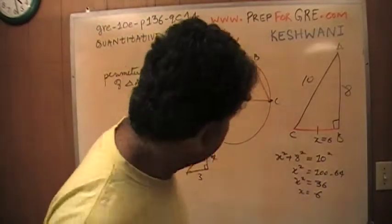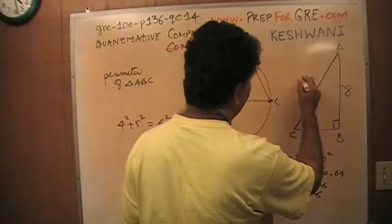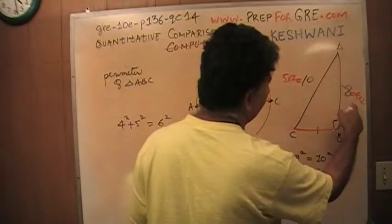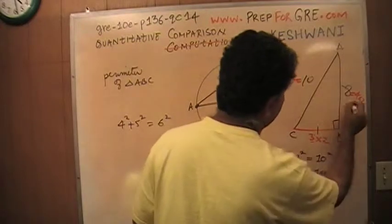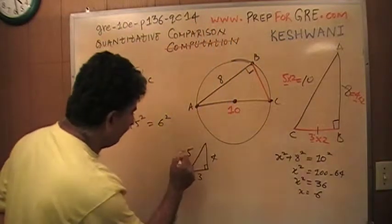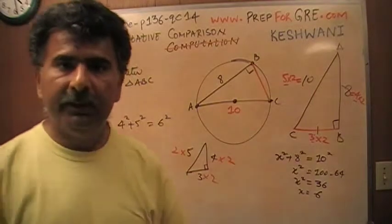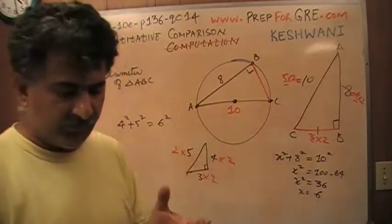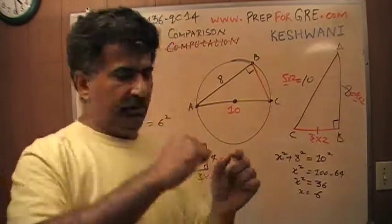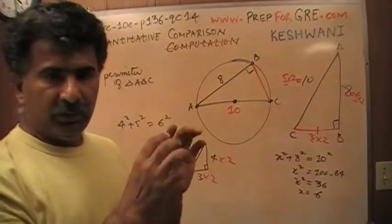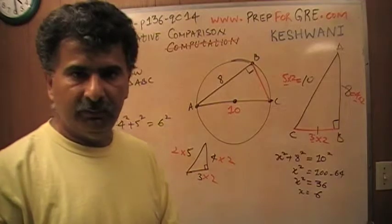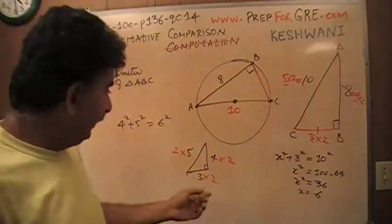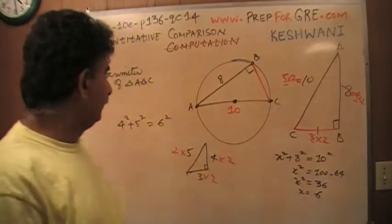This is a 3-4-5 triangle incognito because what it is is 5 times 2, 4 times 2, and the missing side is 3 times 2. It's still the same triangle, except everything has been magnified by 100%. If you draw a 3-4-5 triangle with 3 inches, 4 inches, and 5 inches, and put it in a Xerox machine magnified by 100%, it will still be the same 3-4-5 triangle but now the sides are 6, 8, and 10. So it's still a 3-4-5 triangle — just scaled up — and the missing side is 6.